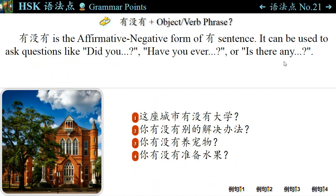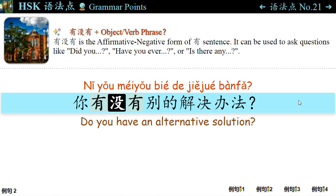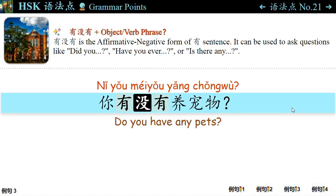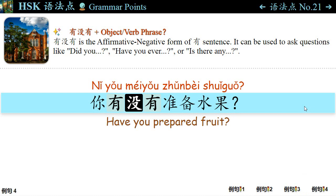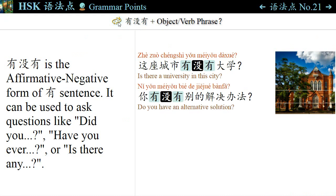语法点二十一: 有没有 is the affirmative-negative form of 有 sentences. It can be used to ask questions like 'Did you...?', 'Have you ever...?', or 'Is there any...?' For example: 这座城市有没有大学? — Is there a university in this city? 你有没有别的解决办法? — Do you have an alternative solution? 你有没有养宠物? — Do you have any pets? 你有没有准备水果? — Have you prepared fruits? 有没有 is the affirmative-negative form of 有 sentences.